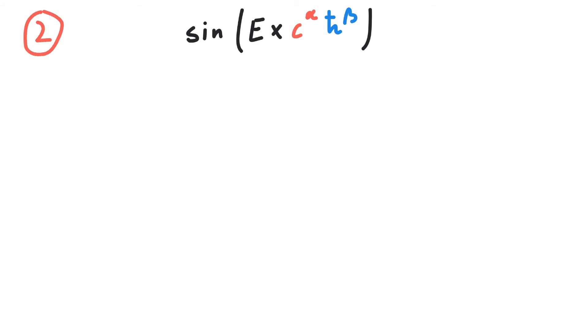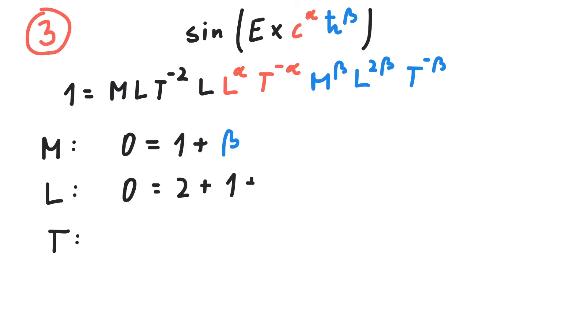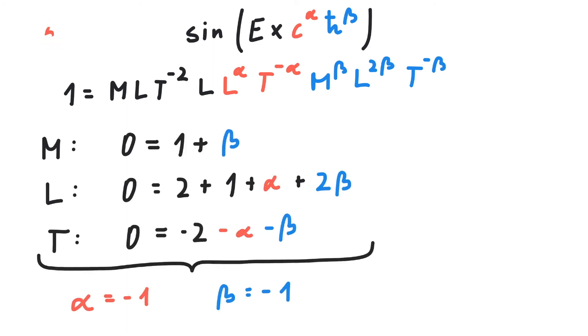Second, write down the dimensions and demand equality. Note that the units within a function must drop out, so therefore we have a one that is no dimension on the left-hand side. Third, write down a set of equations and solve them. Fourth, write down the result.